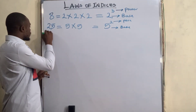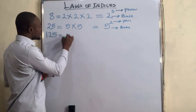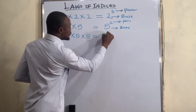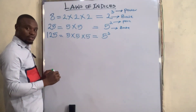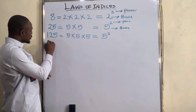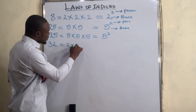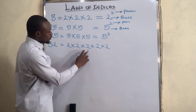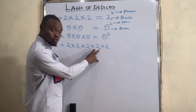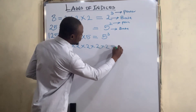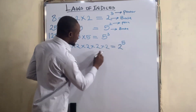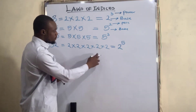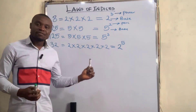125 is written as five times five times five, which is five to the power of three. We also have 32, which is two times two times two times two times two. Two times two is four, four times two is eight, eight times two is 16, 16 times two is 32. So 32 is two to the power of five, because there are five twos.